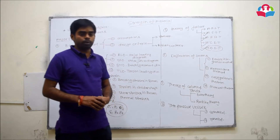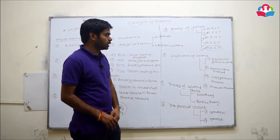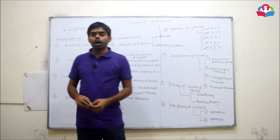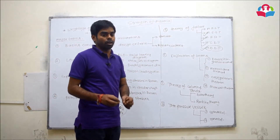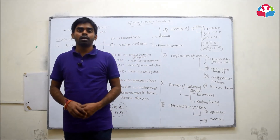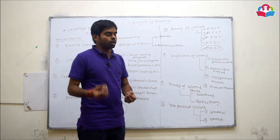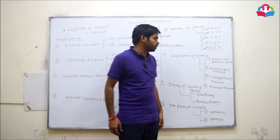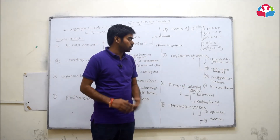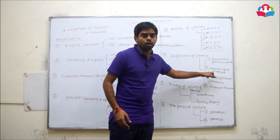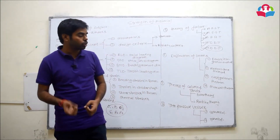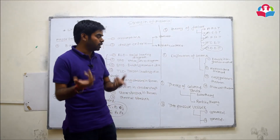The sixth topic is the deflection of the beam, which is very important for both civil and mechanical engineers. Four major subtopics are covered. The first is the double integration method — an analytical method to calculate deflection. The second is the moment area method, used when the double integration method involves very difficult calculations. The third is Castigliano's method, applicable where the moment area method is not suitable. The fourth is the Maxwell theorem, equally important for calculating deflection under different loading conditions.